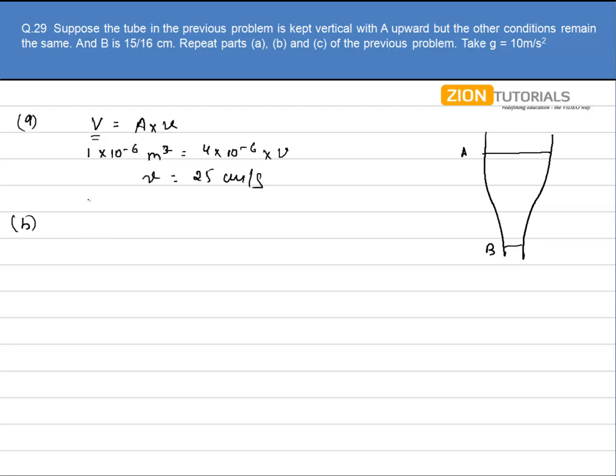And so will be the velocity at point B. That will be again A1 v1 equals A2 v2. So the velocity at B will also be the same as in the previous question, 50 cm per second.